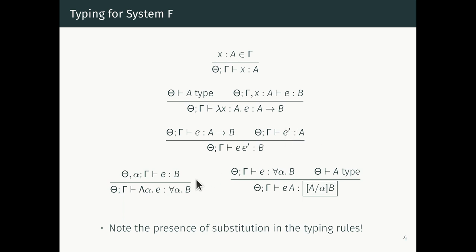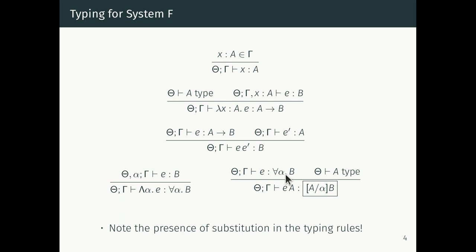All of the action in System F occurs in the two new typing rules. The for-all introduction rule says that big-lambda alpha dot e is well-typed at for-all alpha dot B when we add alpha to the type variable context and check that the body e has type B. And if we have something of type for-all alpha dot B and A is a well-formed type, we're allowed to do a type application e applied to A, and the output will have type A substituted for alpha in B. This is where most of the complexity in System F comes from.